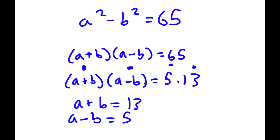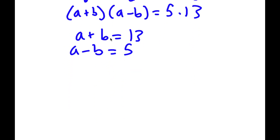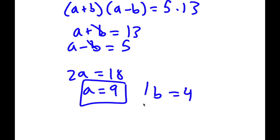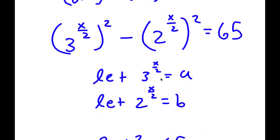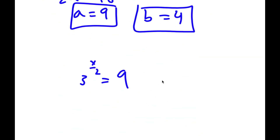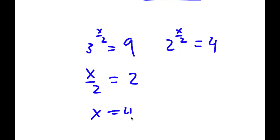This gives a simple system of equations. Adding them, these cancel out: 2a equals 18, meaning a equals 9. And if a equals 9, then b equals 4. Going back, 3 to the power of x over 2 is equal to 9. Since 3 squared equals 9, x over 2 equals 2, meaning x equals 4. And for 2 to the power of x over 2 equals 4: plugging in 4 gives 2 squared equals 4, which checks out.